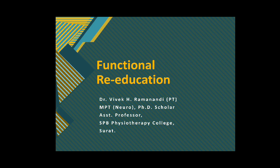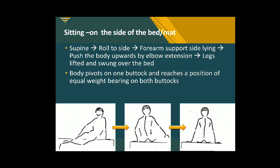First, from supine, rolling to sideline, to forearm-supported sideline. The next position the patient can assume is sitting on the side of the bed or mat, where the patient's legs are hanging over the edge. The patient can come to sit from supine, rolling to sideline, to forearm-supported sideline, and then push the body upwards by doing elbow extension while the legs are lifted and swung over the bed.